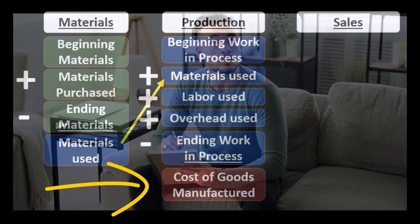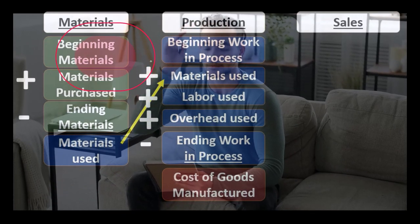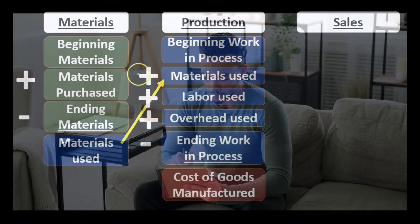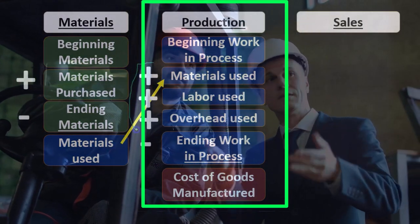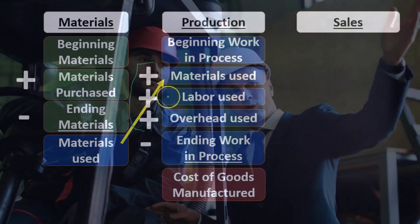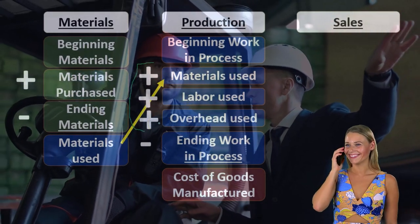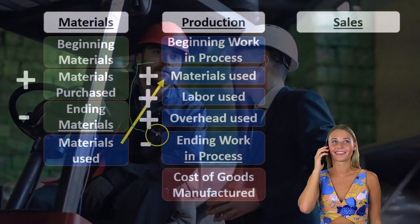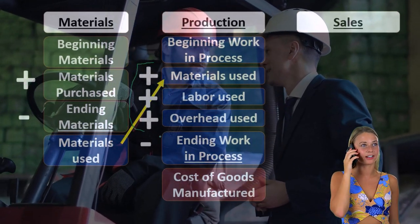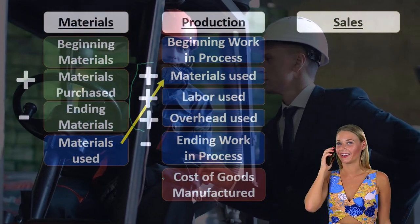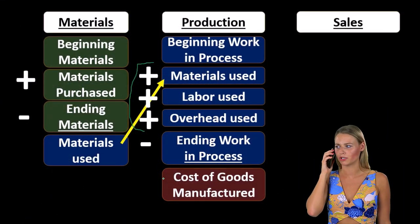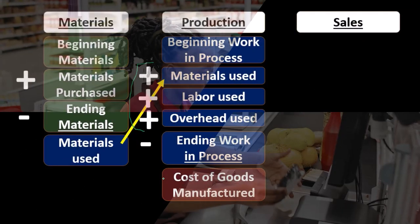These two calculations are similar in nature: beginning work in process, plus materials used, direct labor, and overhead — all costs put into production — minus ending work in process gives us cost of goods manufactured. Cost of goods manufactured is what we made during the period; it is not to be confused with cost of goods sold, which is what we actually sold during the period.